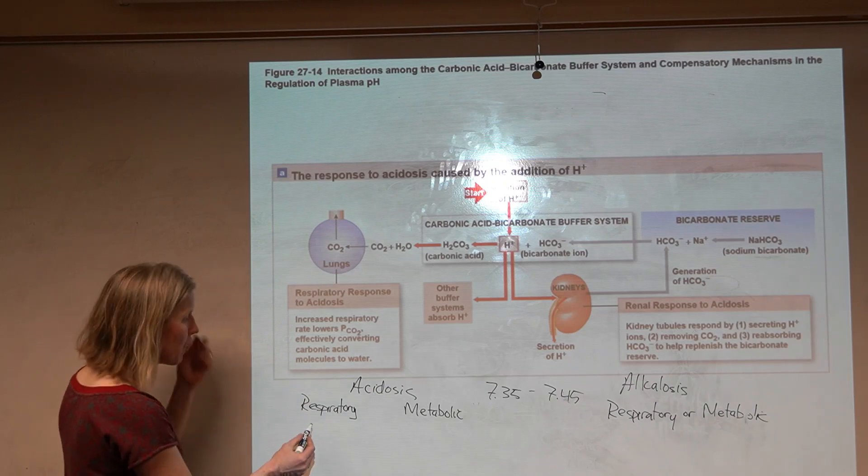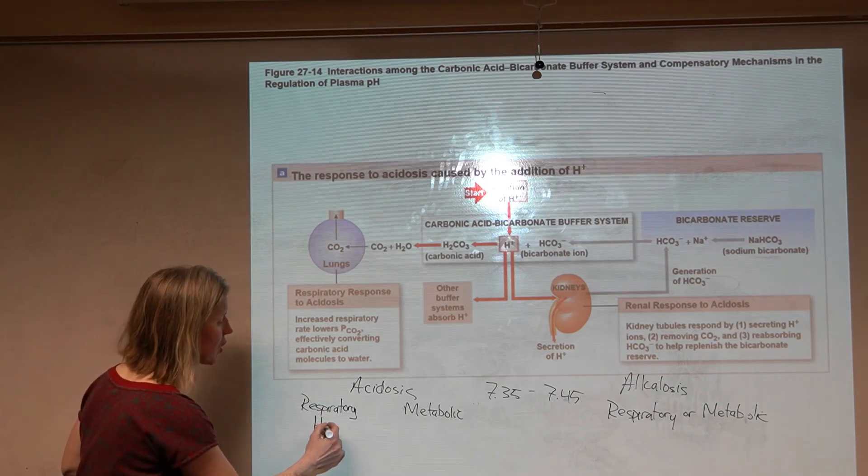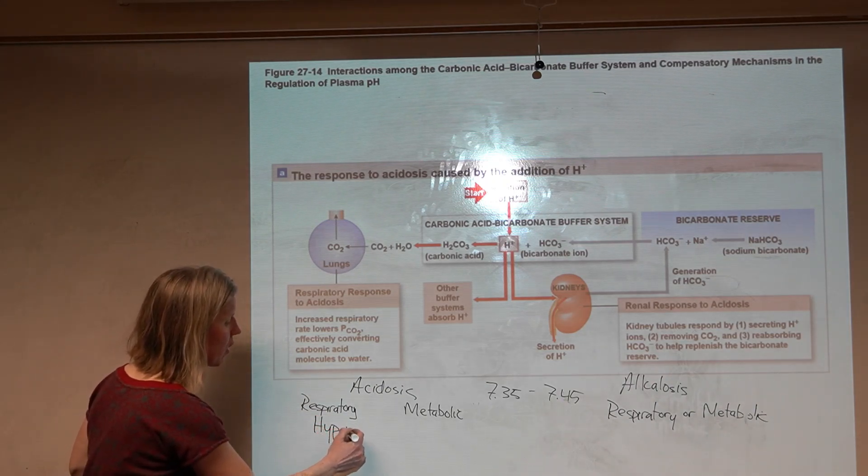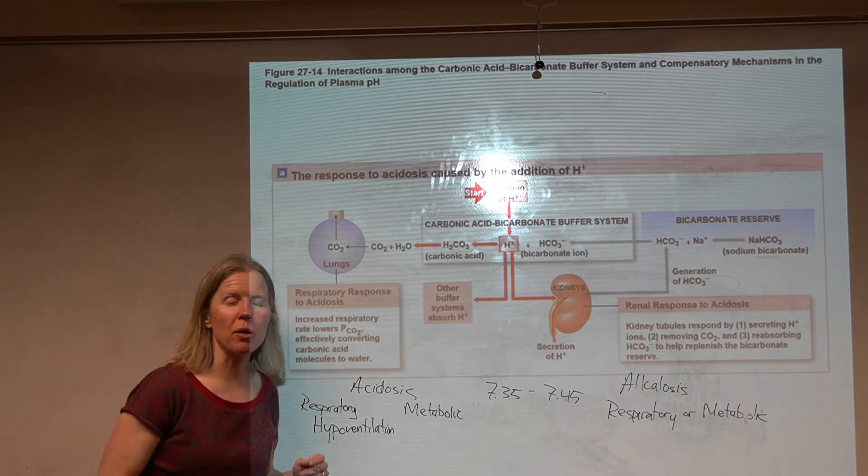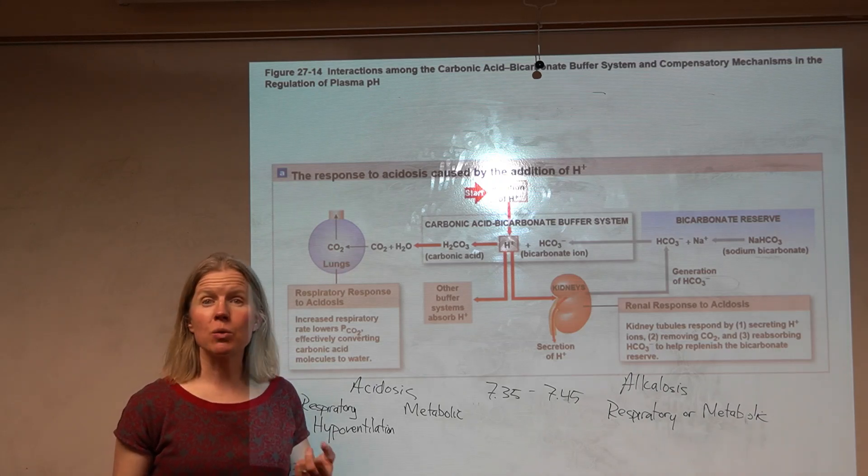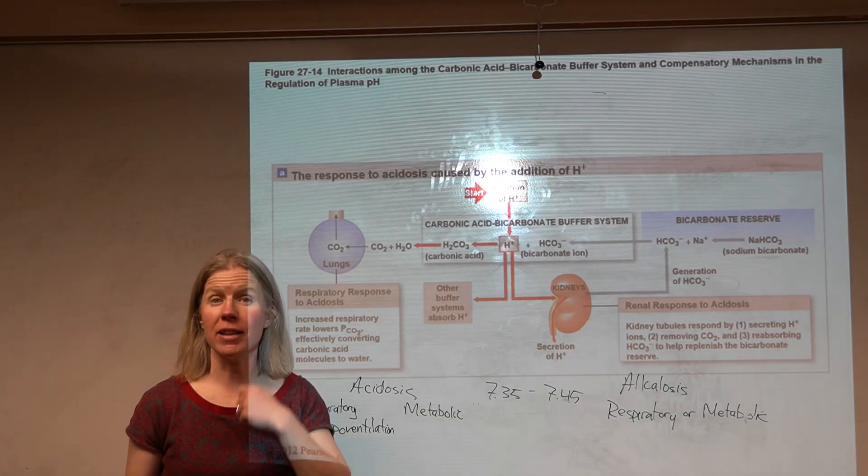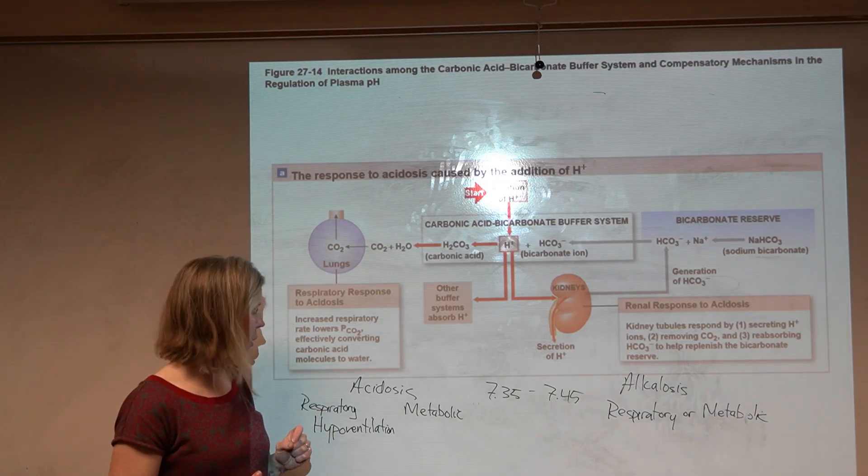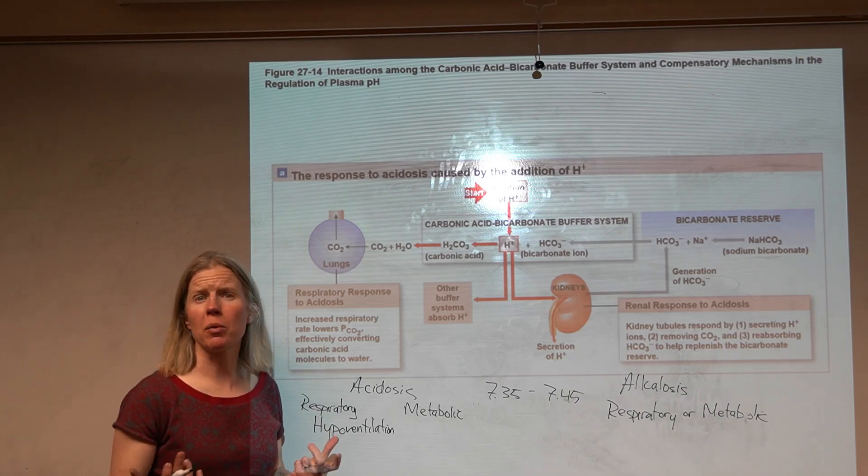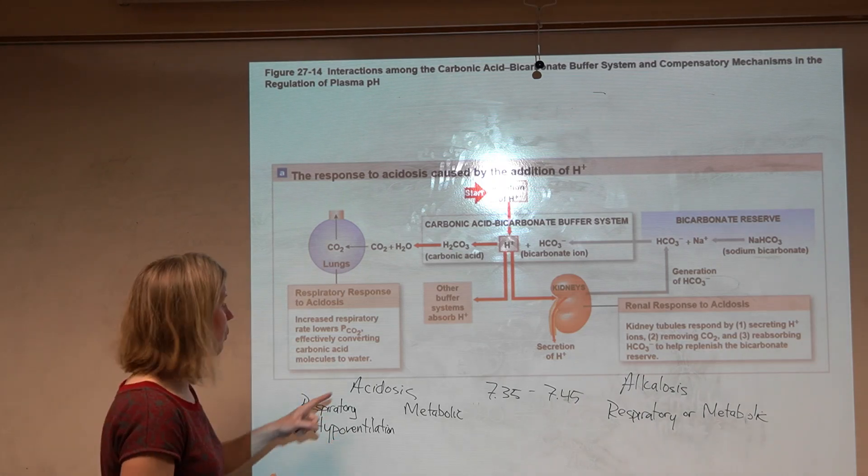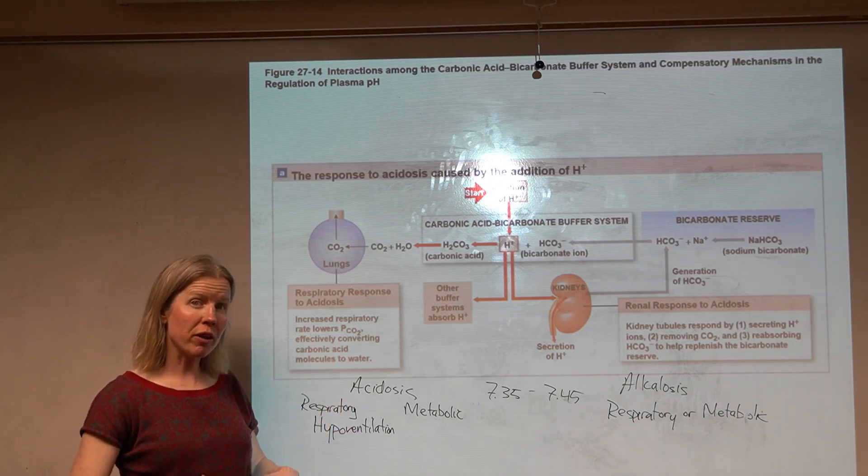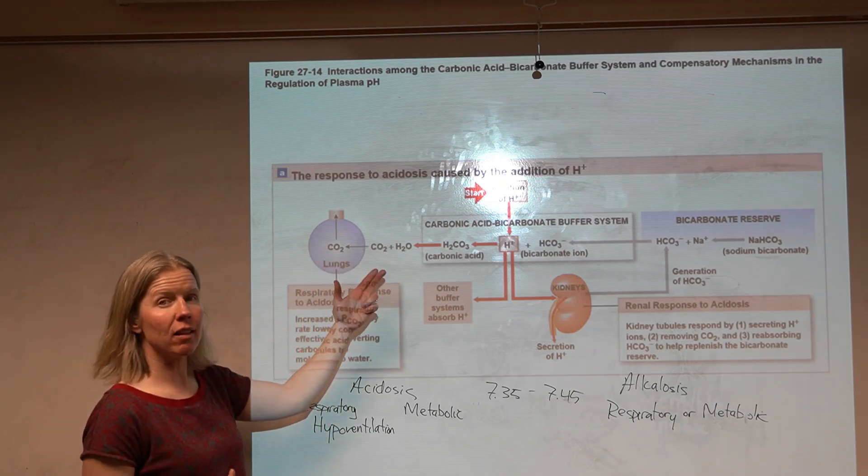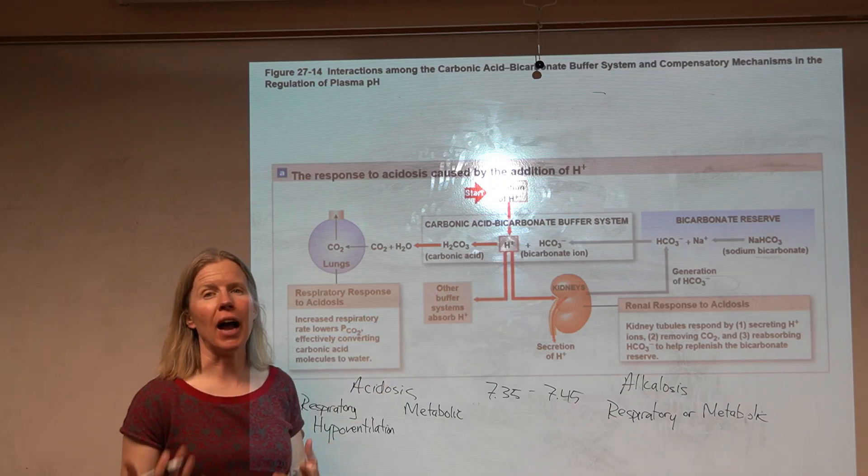So respiratory acidosis is caused by hypoventilation - breathing at too slow of a rate. You might see this with a patient who's on a ventilator that's not turned up properly, maybe someone with a brain injury. Respiratory acidosis is when there's hypoventilation, so the problem is here at the lung and it's adding lots of acid to the blood.